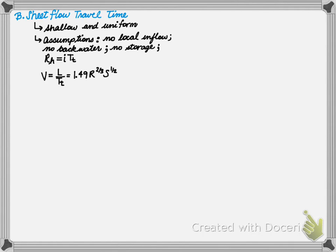There is no storage within the system. And the hydraulic radius in the Manning's equation is a function of both the rainfall intensity and the travel time. So using the velocity equation and the Manning's equation, we can set them equal to each other as shown in the equation right here.